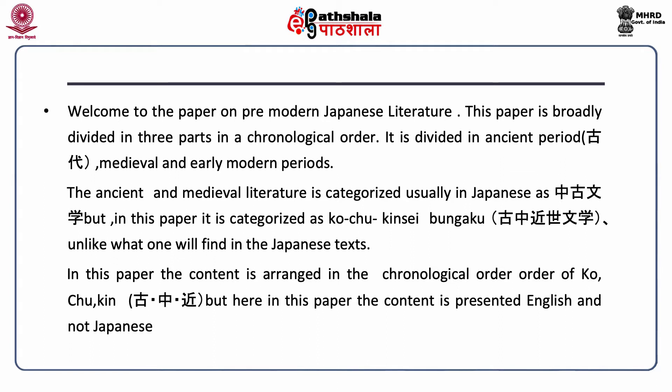This paper is broadly divided into three parts period-wise: the ancient period, medieval, and early modern period. The ancient and medieval literature you will find in the Japanese text as Chu Kobungaku. However, in this paper it is given in a chronological order as Ko Chu Kin Se Bungaku. So the module is titled not as Chu Kobungaku but as Ko Chu Kin Bungaku.